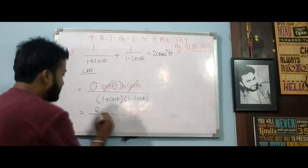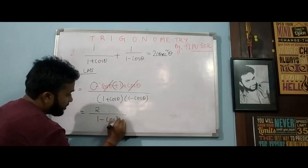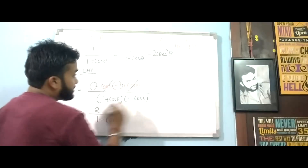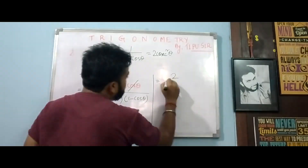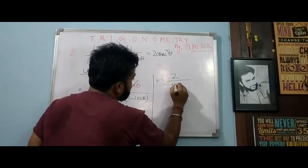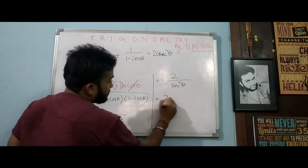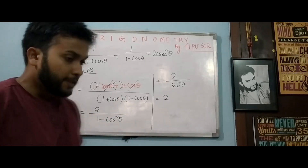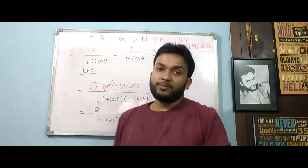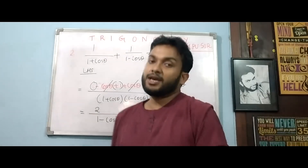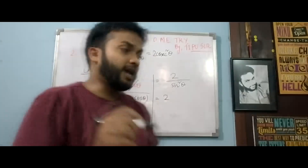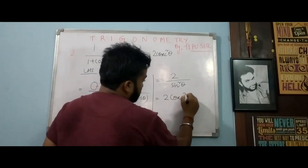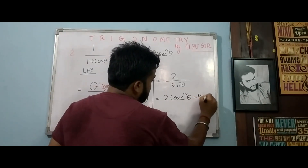So the numerator is 2, and the denominator is (1 + cos theta)(1 − cos theta) = 1 − cos²θ = sin²θ. Therefore the result is 2/sin²θ, which can also be written as 2 cosec²θ, which equals the right-hand side.